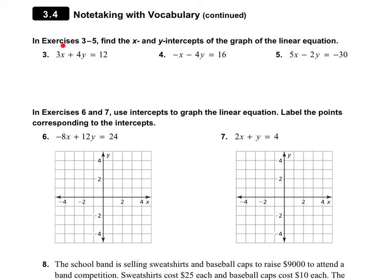On the next page, in exercises 3 through 5, they want us to find the X and Y-intercepts of the graph of the linear equation. The easiest way to do that, remember, is to do a T-chart. I'm going to do number 4 with you first. We're going to plug in 0 for Y and solve for X, and then 0 for X and solve for Y. When I plug in 0 for Y, we get negative X minus 4 times 0 equals 16. 4 times 0 is 0, so that part goes away. I still have a negative in front of the X, so I need to divide out a negative 1, and that gives me negative 16.